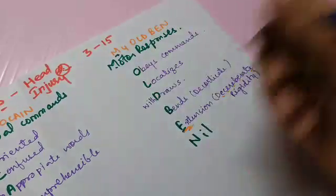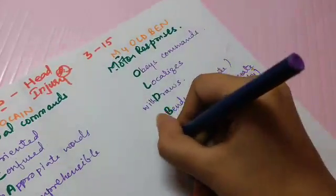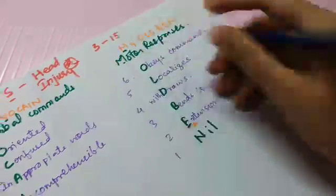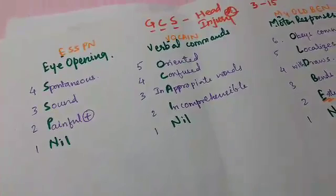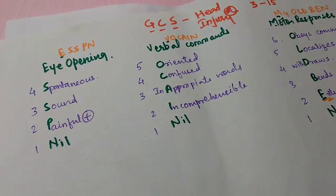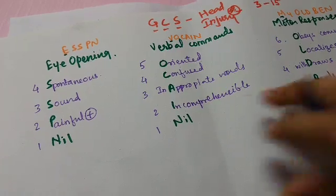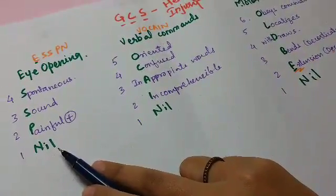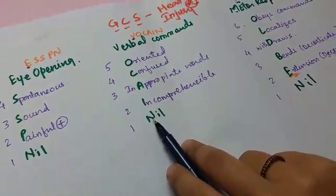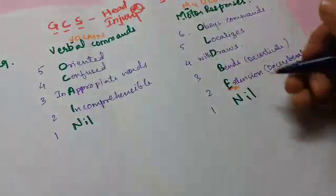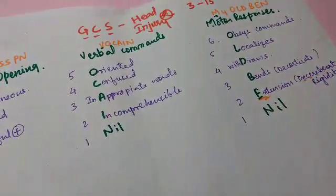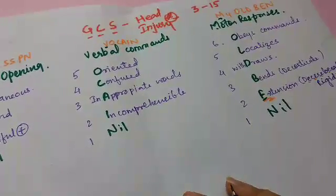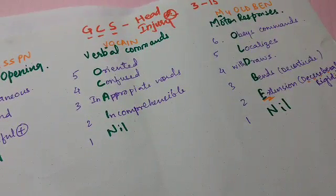You can score motor responses as 1, 2, 3, 4, 5, and 6. After revising this mnemonic a couple of times, you can be super fast — you can just look at the patient and say the GCS is 3. That means the patient is not opening their eyes, not following verbal commands, and not eliciting any motor response.